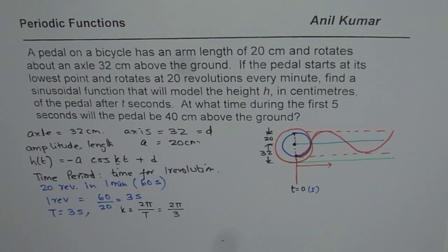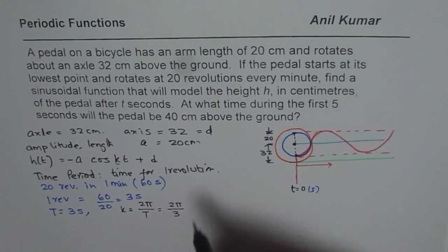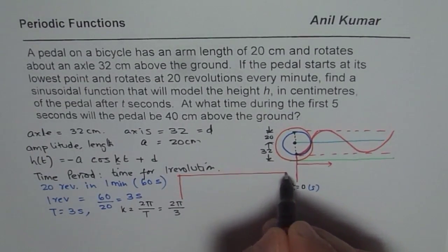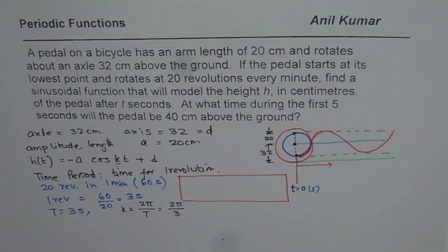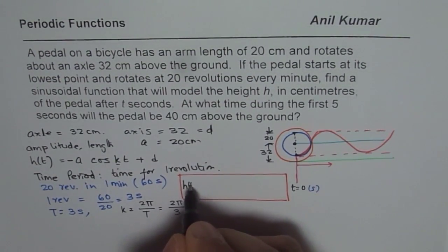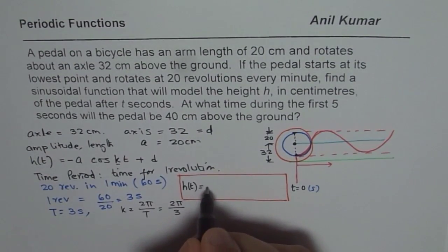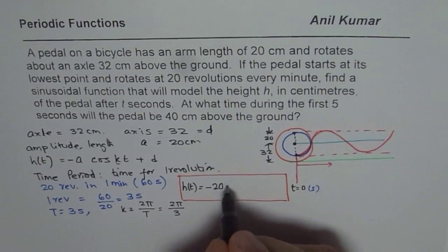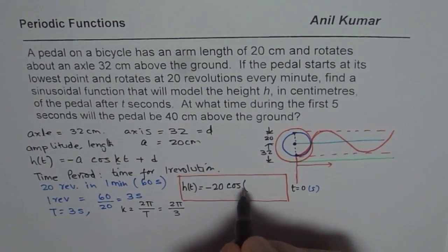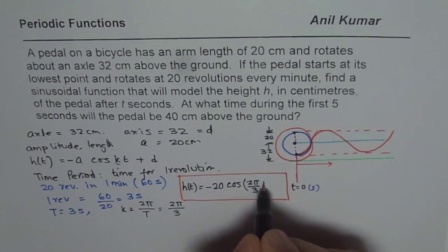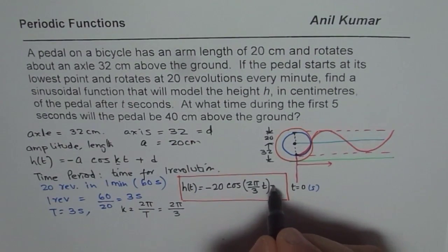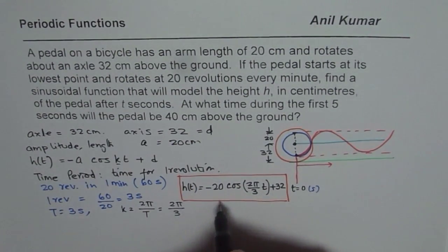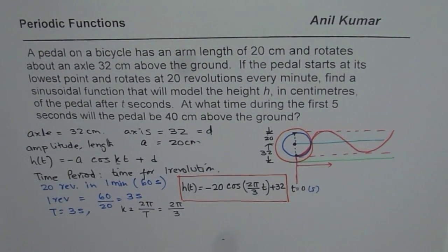With all values in place, we can now write down our equation. The height of the pedal h(t), where time is in seconds, equals minus 20 times cosine of (2π/3)t, plus 32. The height is in centimeters above the ground and t is in seconds. So that is the complete equation.